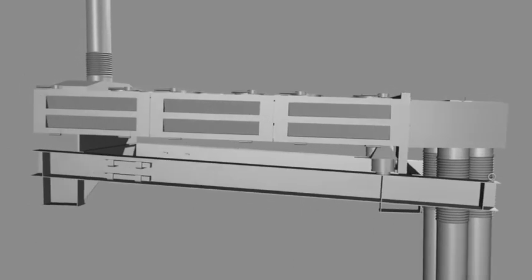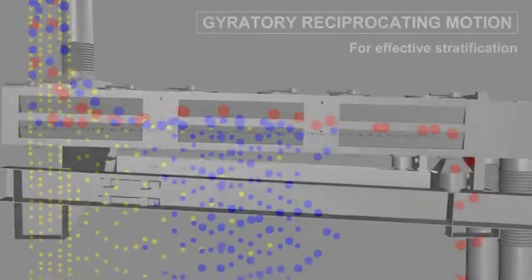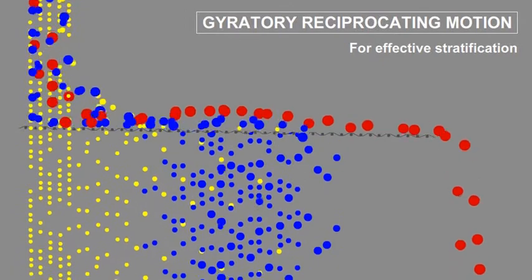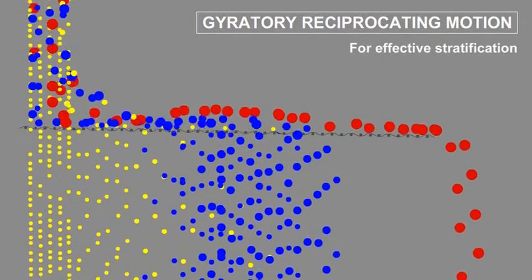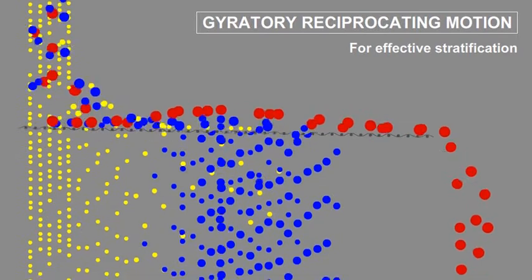The gyratory reciprocating motion naturally stratifies the smaller particles toward the screen surface. This creates a condition that enables the screener to deliver very precise near-sized separations.